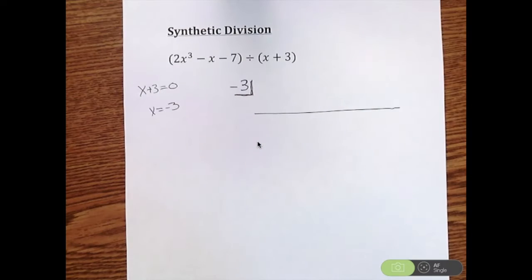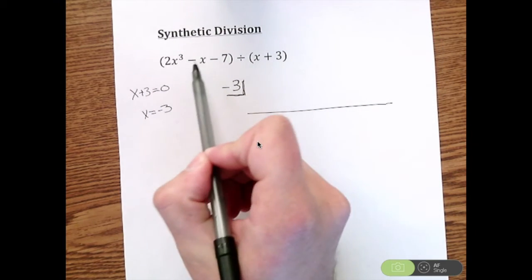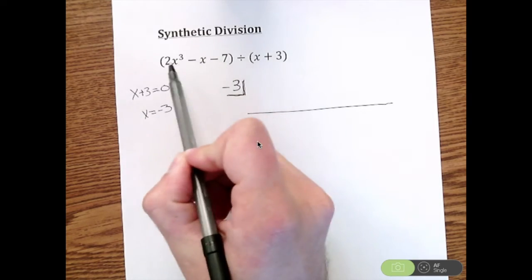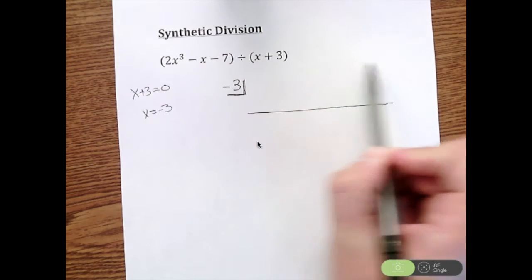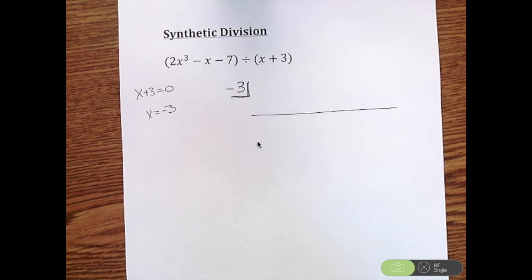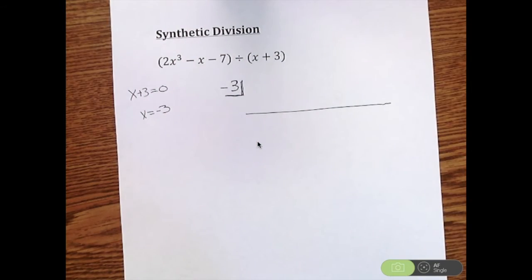The other piece we need to use is what we're dividing by. Now if you notice, we go from x cubed to x to our constant - we don't have our x squared. What I'm going to do is only do this the first time just so you can see how it works. You don't need to do this every time with synthetic division.